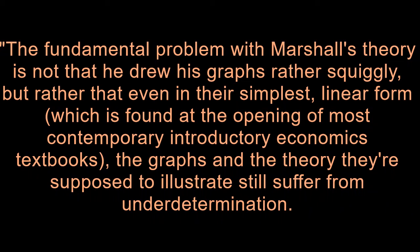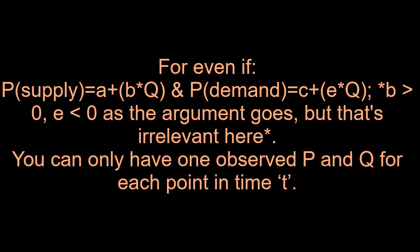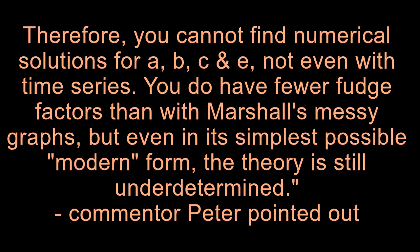The fundamental problem with Marshall's theory is not that he drew his graphs rather squiggly, but rather that even in their simplest, linear form, which is found at the opening of most contemporary introductory economics textbooks, the graphs and the theory they're supposed to illustrate still suffer from underdetermination. For even if p supply equals a plus b asterisk q and p demand equals c plus e asterisk q, b greater than 0, e less than 0, as the argument goes, but that's irrelevant here, you can only have one observed p and q for each point in time t. Therefore, you cannot find numerical solutions for a, b, c, and e, not even with time series. You do have fewer fudge factors than with Marshall's messy graphs, but even in its simplest possible, modern form, the theory is still underdetermined.